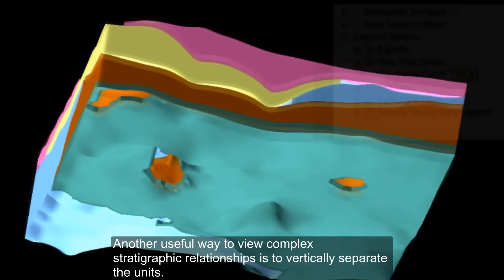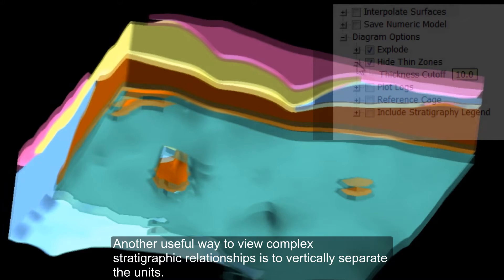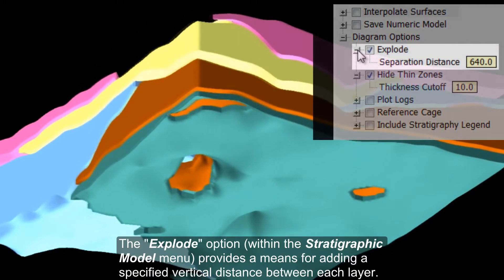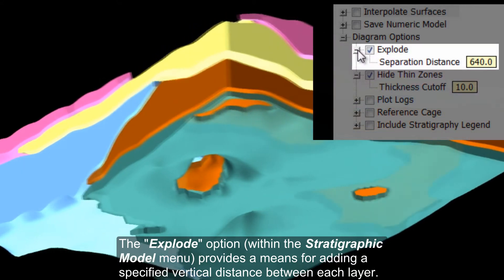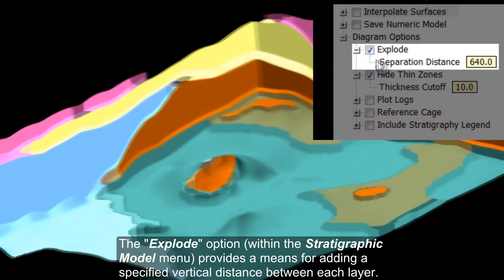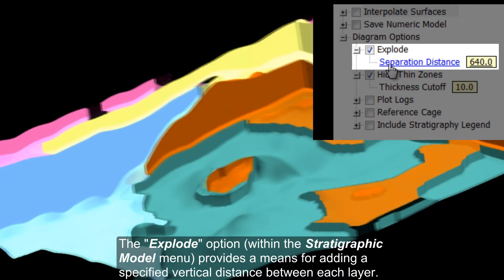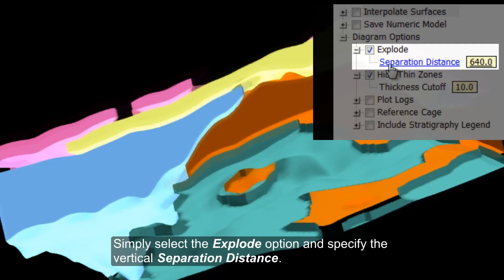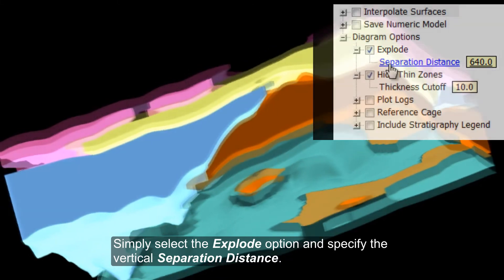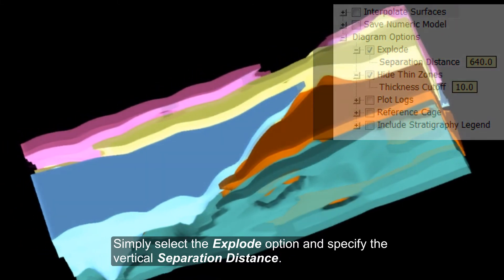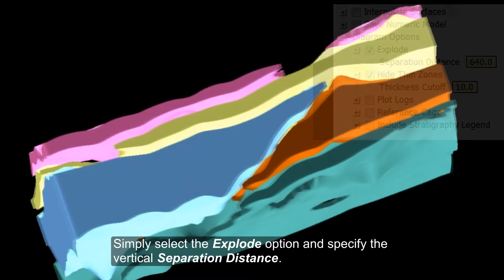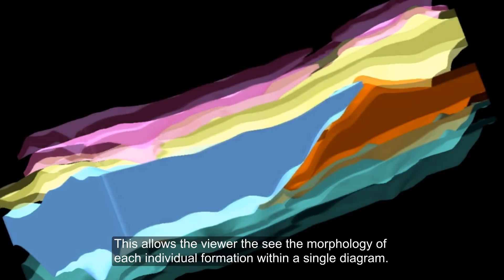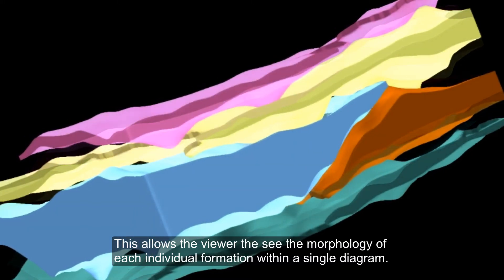Another useful way to view complex stratigraphic relationships is to vertically separate the units. The Explode option within the Stratigraphic Model menu provides a means for adding a specified vertical distance between each layer. Simply select the Explode option and specify the vertical separation distance. This allows the viewer to see the morphology of each individual formation within a single diagram.